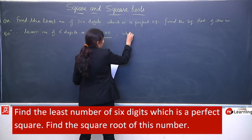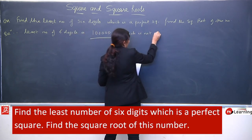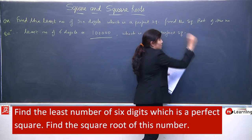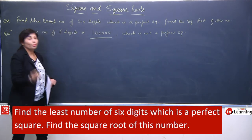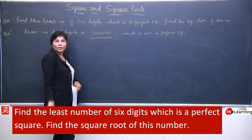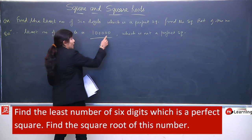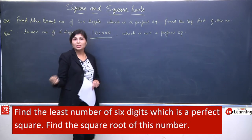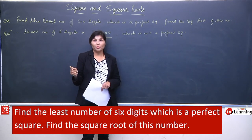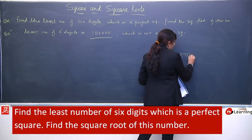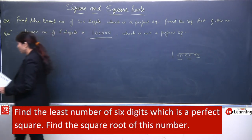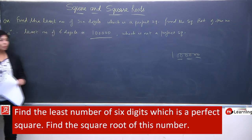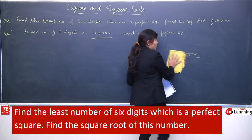Yeh clearly dikhta hai: which is not a perfect square. Perfect square ki bahut saari properties padhi thi — yahan number of zeroes count karenge: five zeroes — that is an odd number. Odd number of zeroes hote hain toh woh perfect square nahi hote. Even number of zeroes hote toh confirm perfect square hota. Property ke through already guess kar liya ki this is not a perfect square.